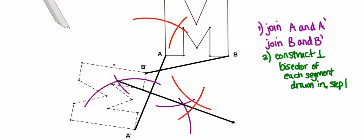And again, I'll grab my straight edge, finish up that perpendicular bisector. And then the center of rotation is simply going to be the spot where those two perpendicular bisectors intersect.